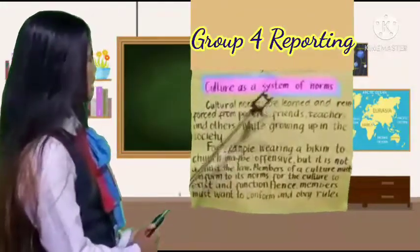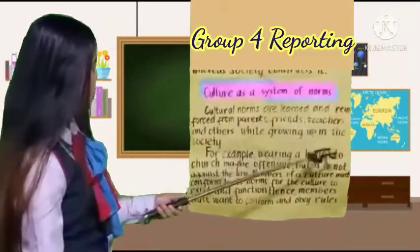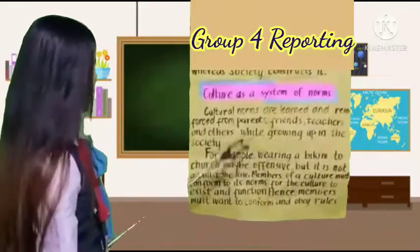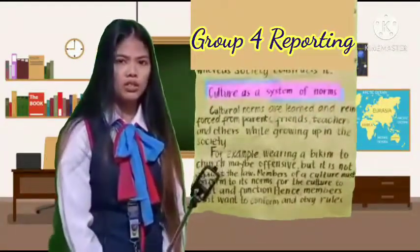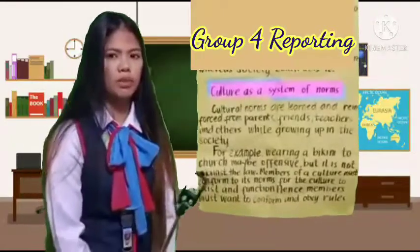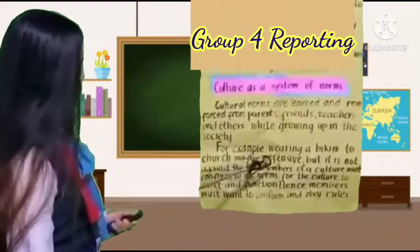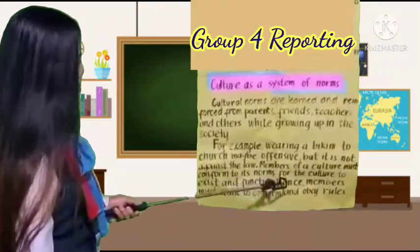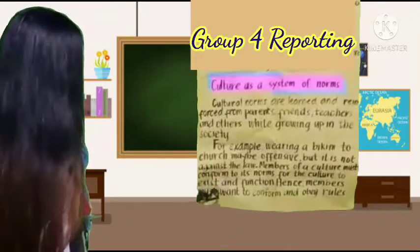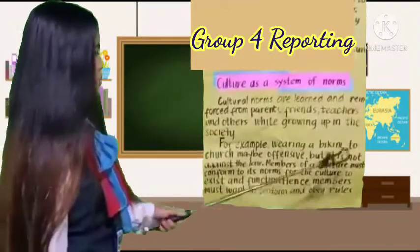Thank you Group Three. Group Four — cultural norms. Culture is a system of norms learned and reinforced from parents, friends, teachers, and others while growing up in society. Cultural norms are the standards we live by — the shared expectations and rules that guide behavior within social groups. For example, wearing a bikini to church may be offensive but is not against the law. Members of a culture must conform to its norms for the culture to exist and function.